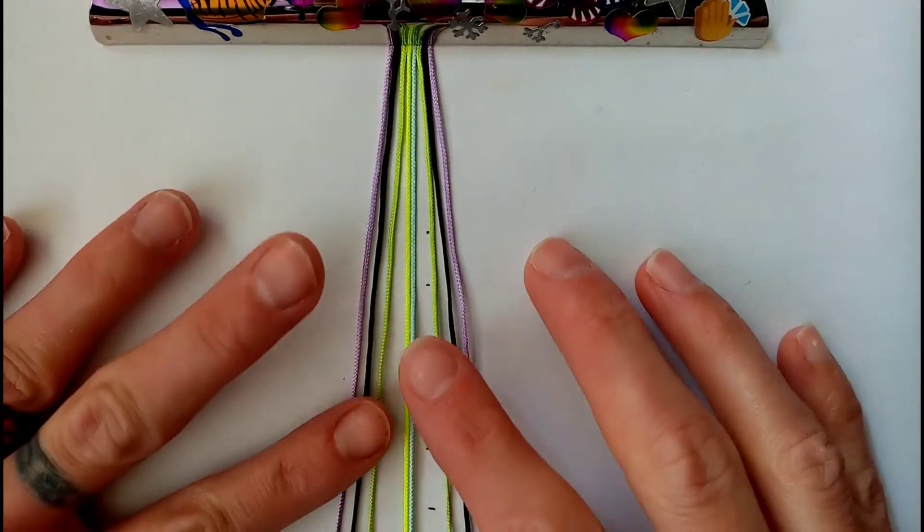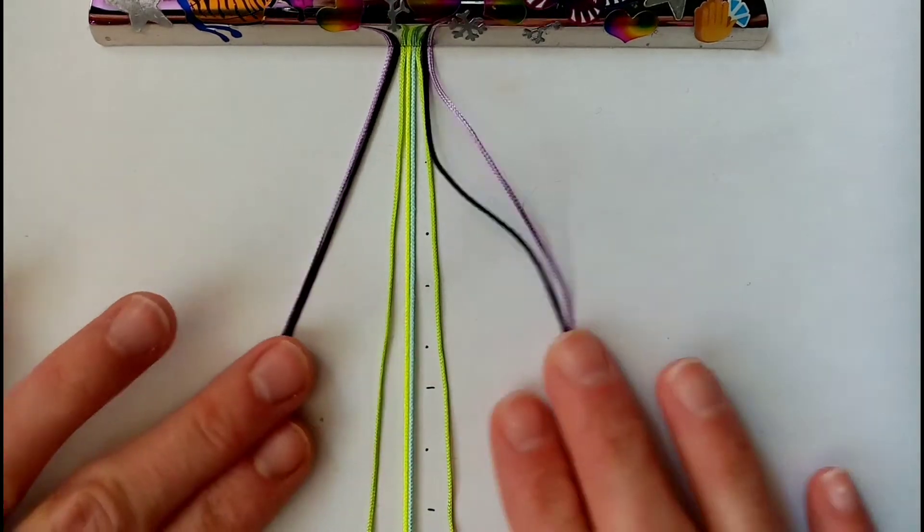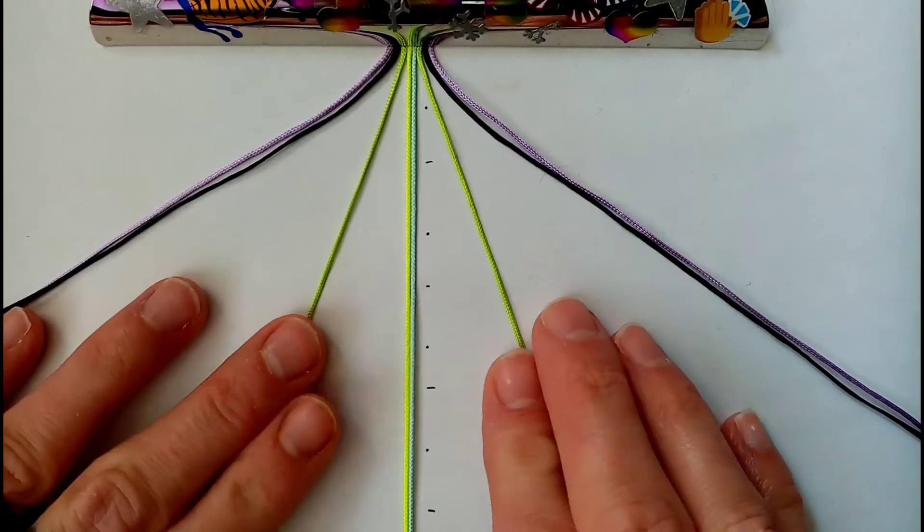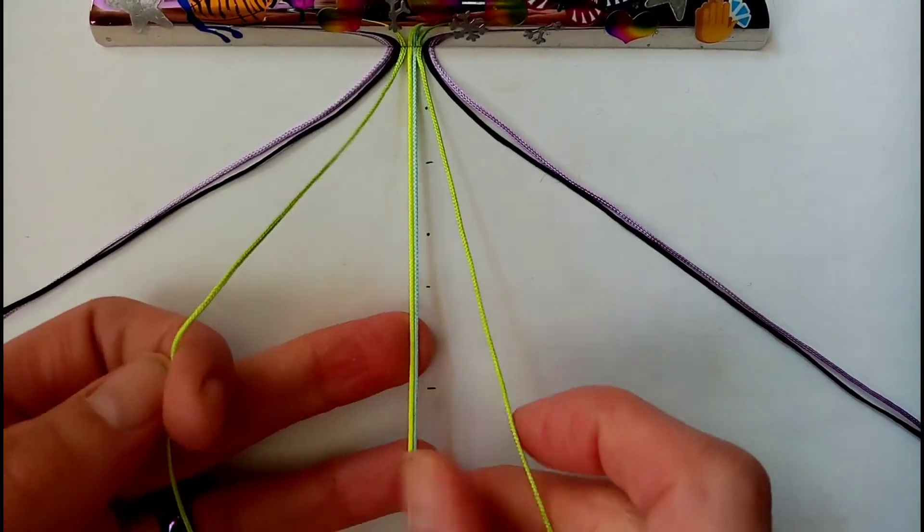This is a 3 row repeat pattern using square knots. To begin you can take the cords on the outside and put these out of the way. You are going to start with the cords in positions 3 and 6. You want to work a square knot over the cords in positions 4 and 5.